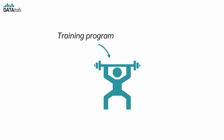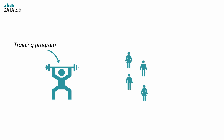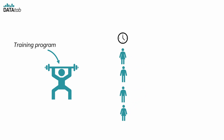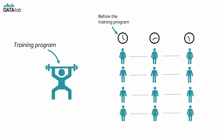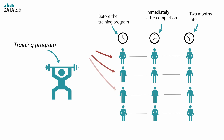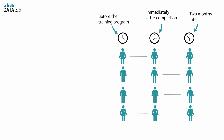Let's take a look at an example. Let's say we want to investigate the effectiveness of a training program. We measure the physical fitness of the participants at several points in time: before the training program, immediately after completion, and two months later. So for each participant we have a value for physical fitness before the program, a value immediately after completion, and a value two months later. Since we are measuring the same participants at different points in time, we are dealing with dependent samples.